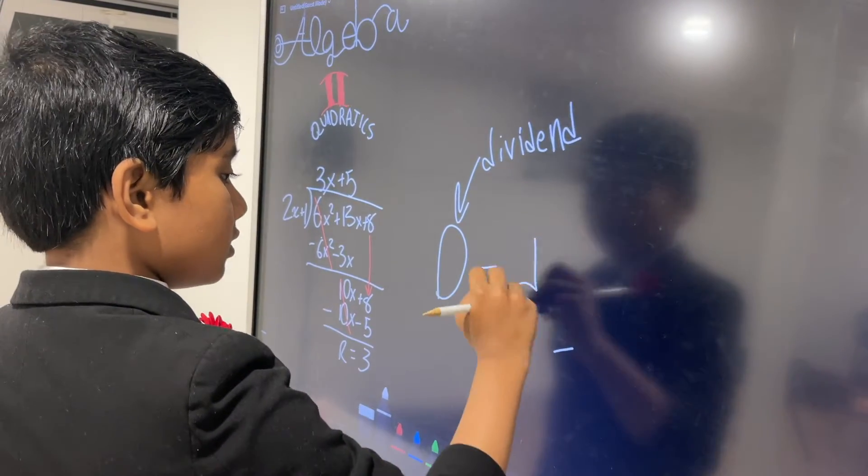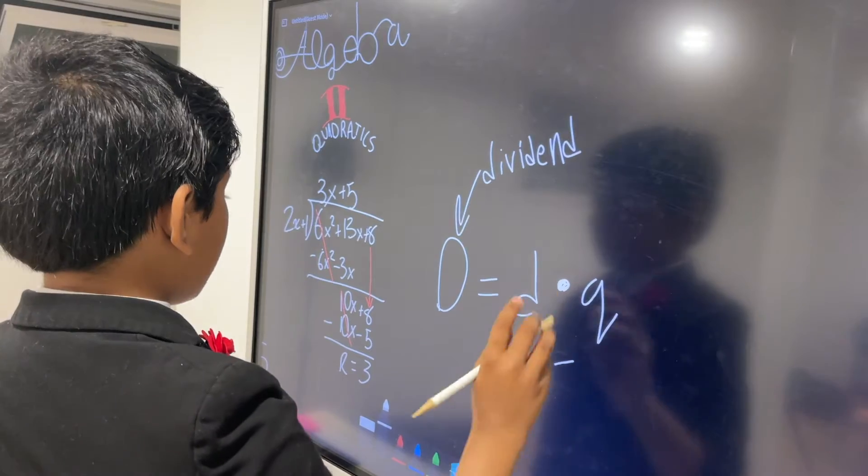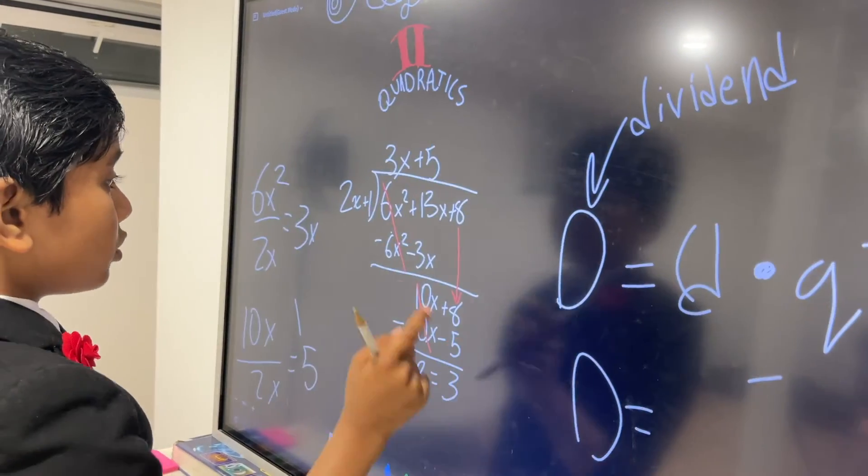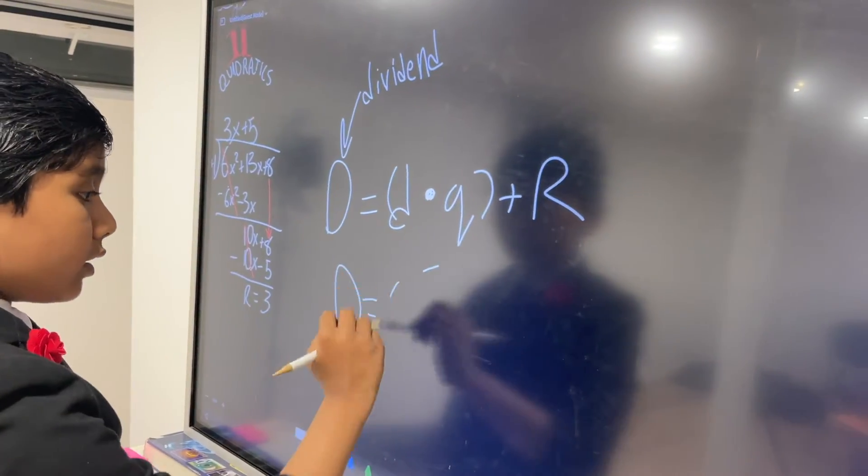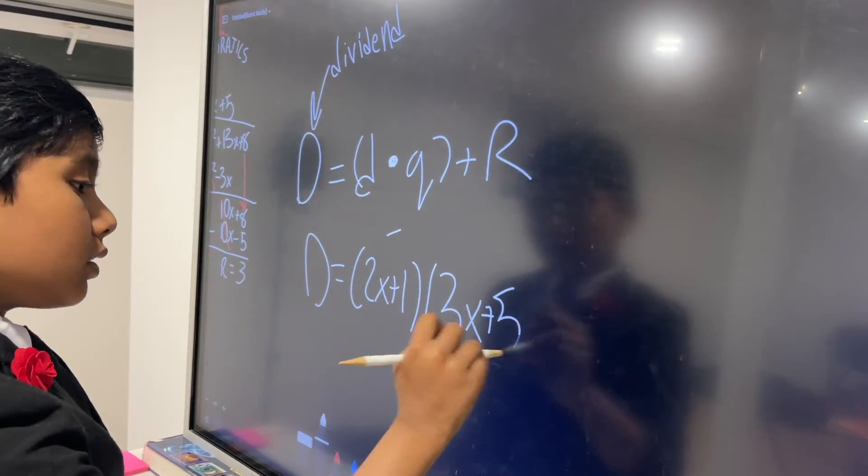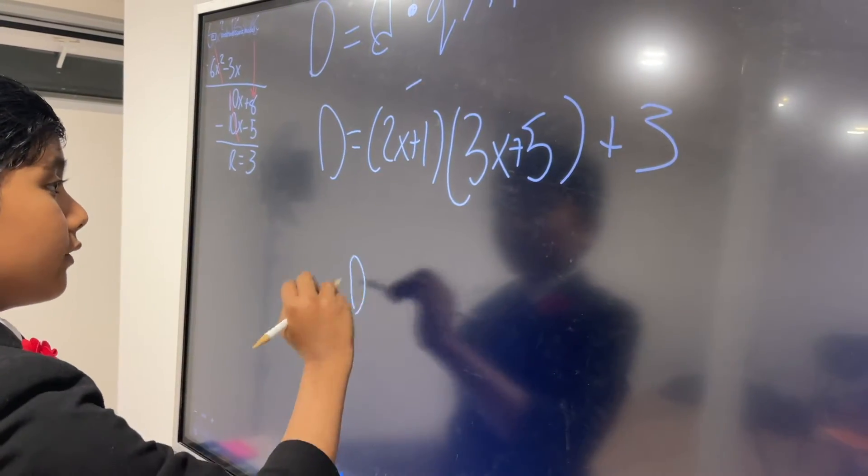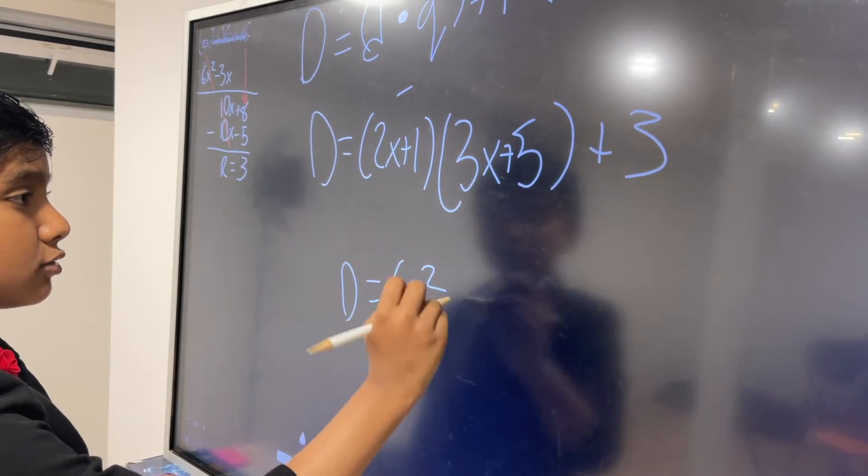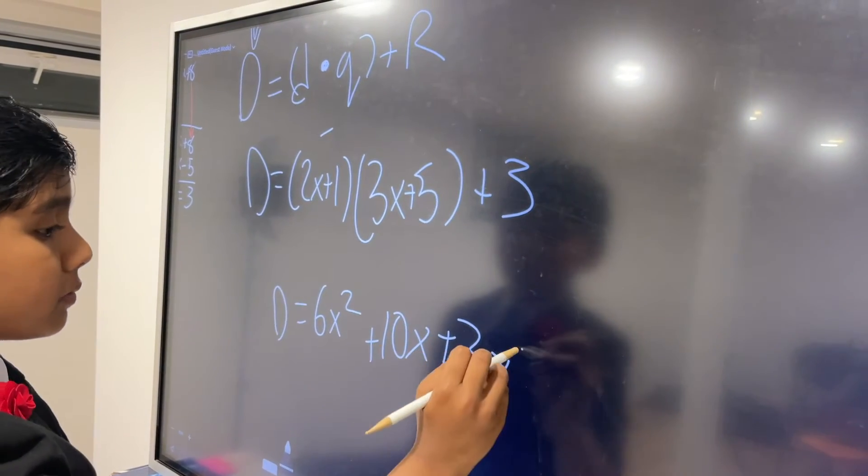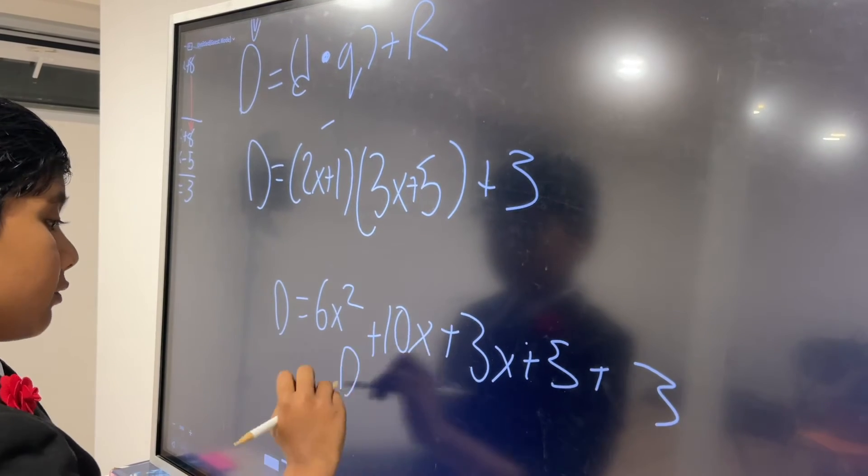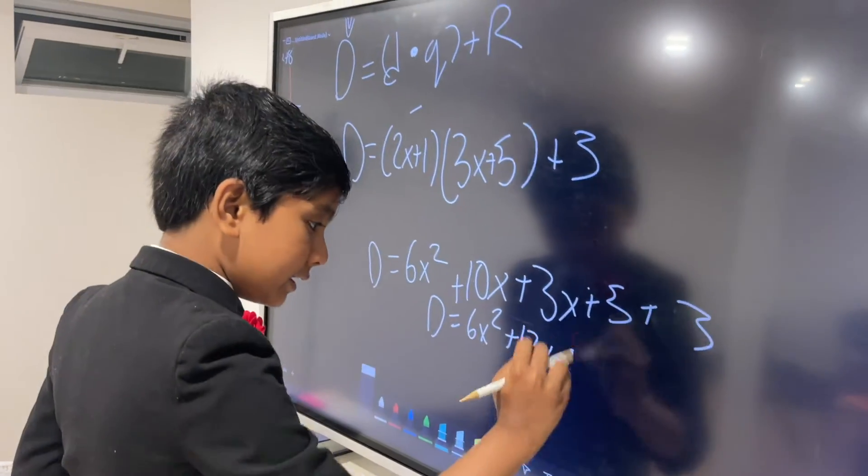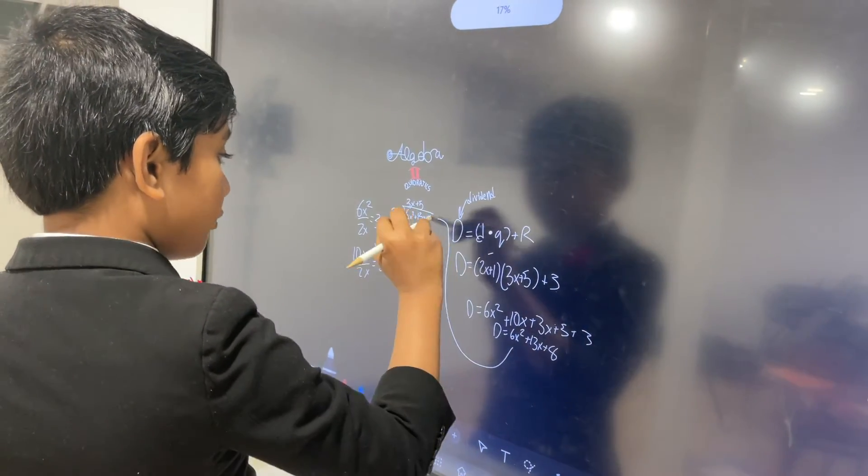Well, this is our dividend. I always keep forgetting if it's dividend or dividend. Then we have divisor times quotient plus remainder. So our divisor, that would be 2x plus 1 times the quotient 3x plus 5 plus our remainder is 3. That gives us 6x squared plus 10x plus 3x plus 5 plus 3. And when we add up all of the like terms, we get plus 8 because of this 3, which is exactly what we had before.